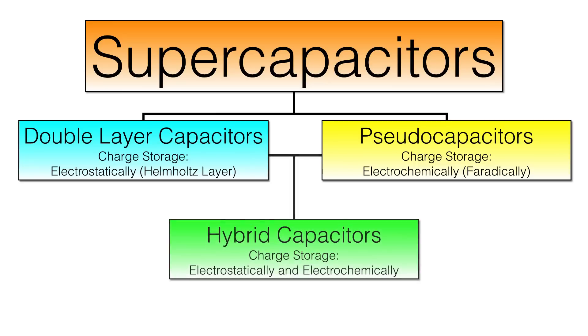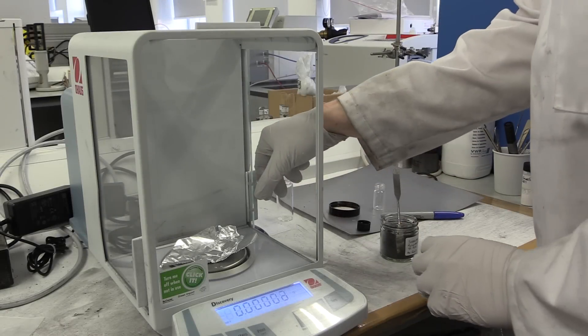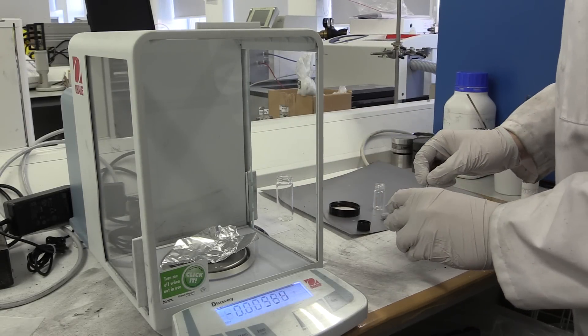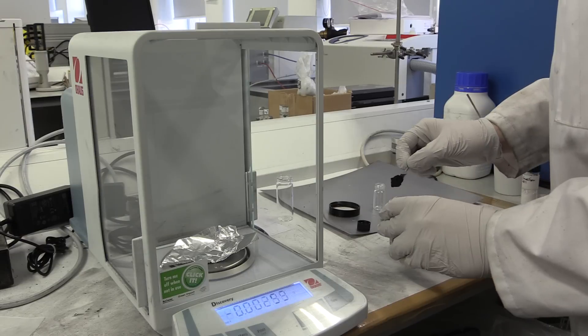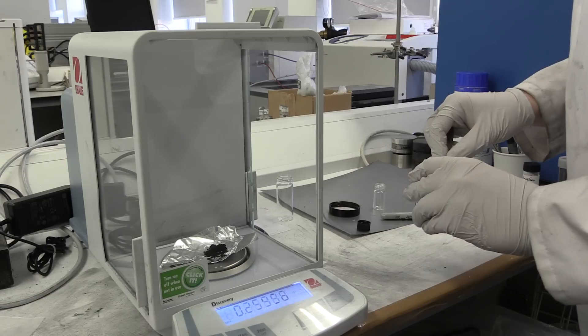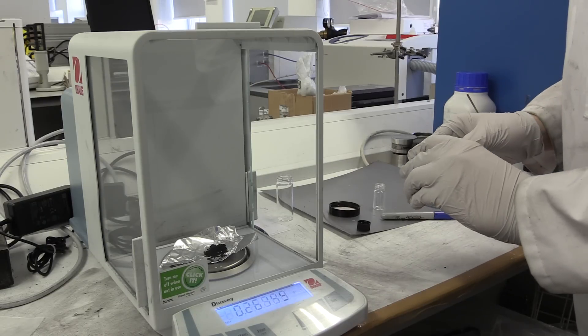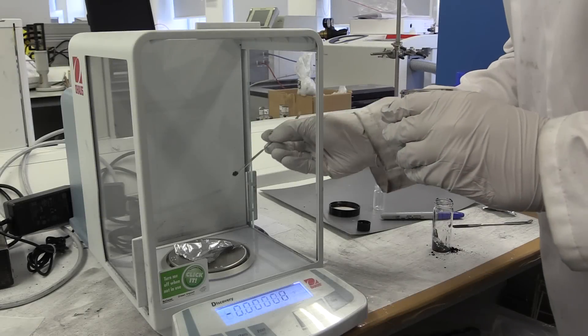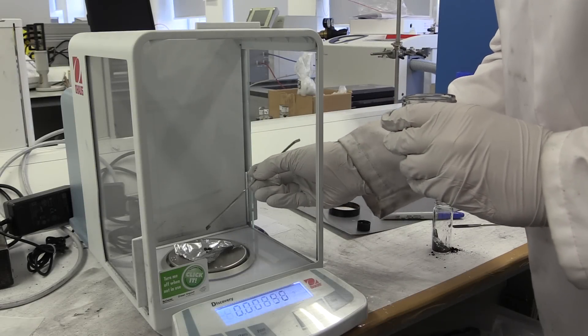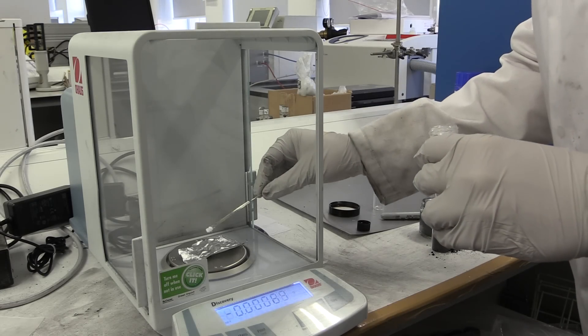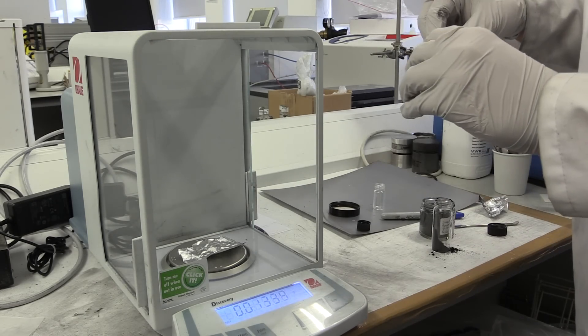Before any other stages in the production process can begin, the mixture of components that make up the electrode material must first be weighed, combined and mixed into a uniform slurry. The three major components of a supercapacitor electrode are active carbon, which provides the surface area for double layer formation, carbon black, which improves the electronic conductivity of the electrode material, and binder, which aids adhesion between the electrode material and the current collector.